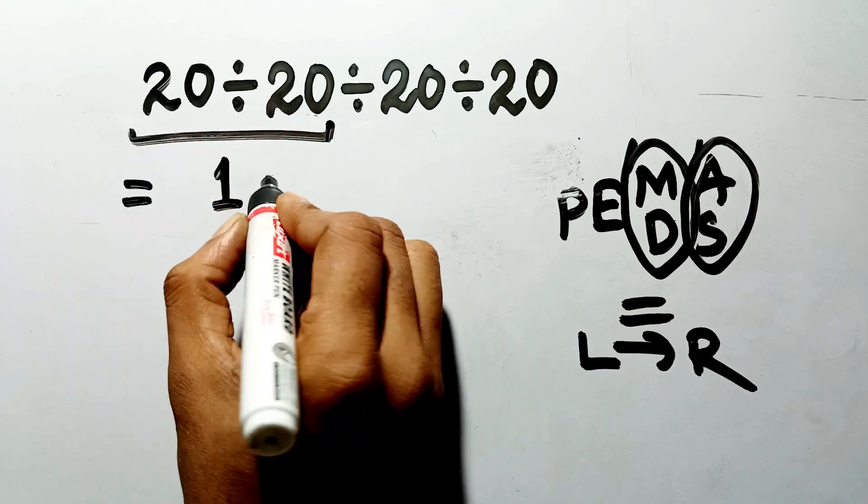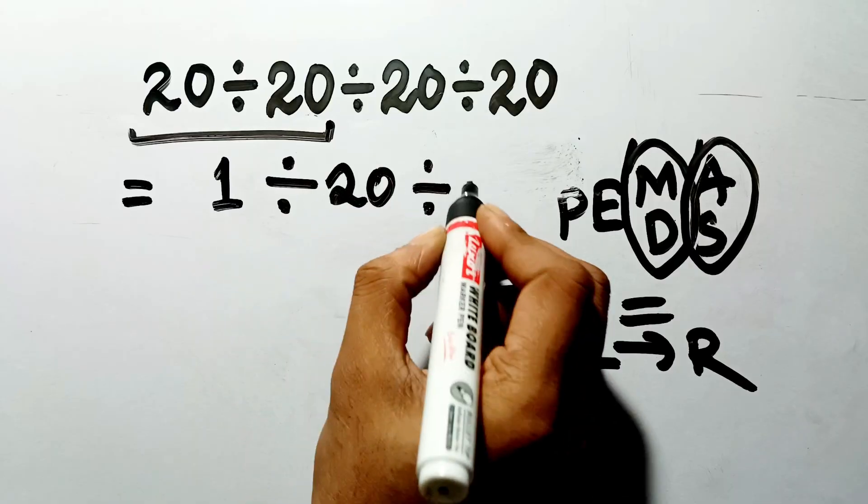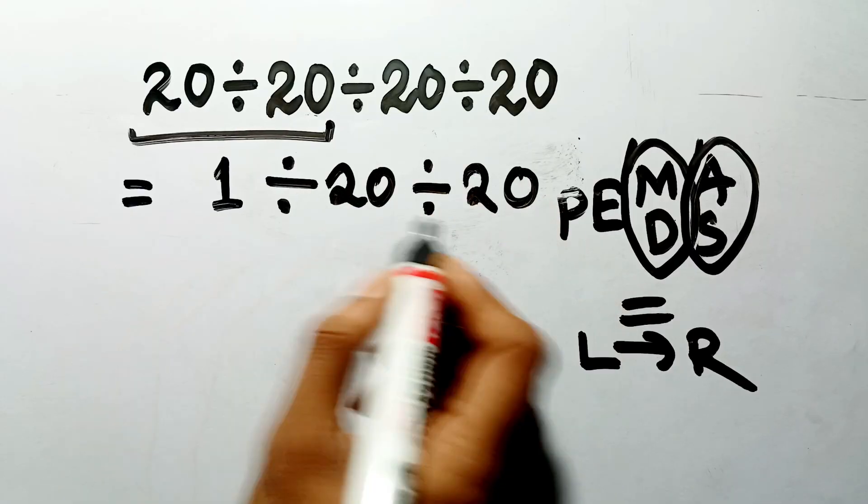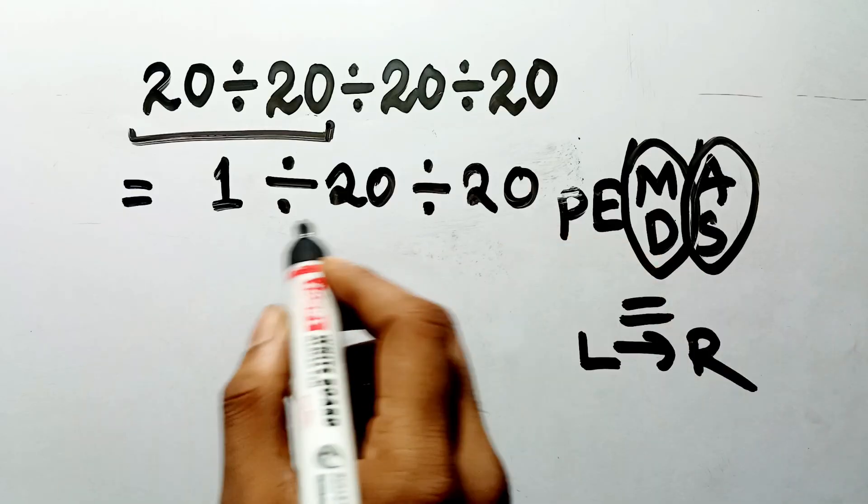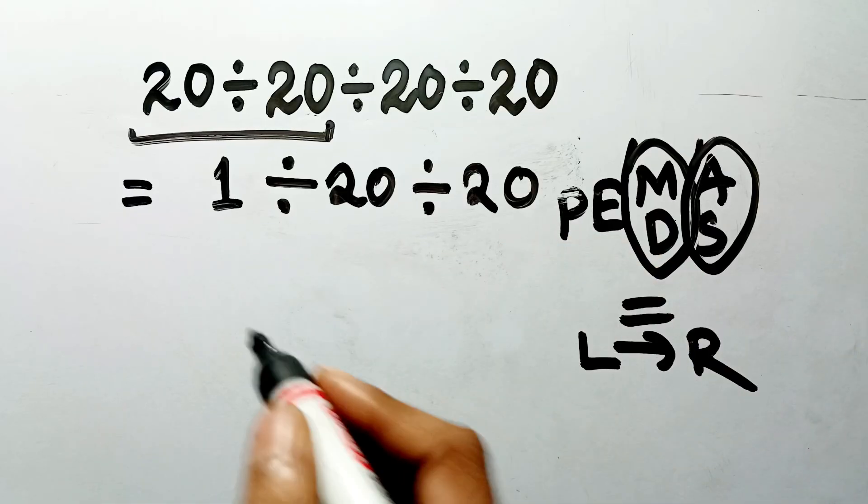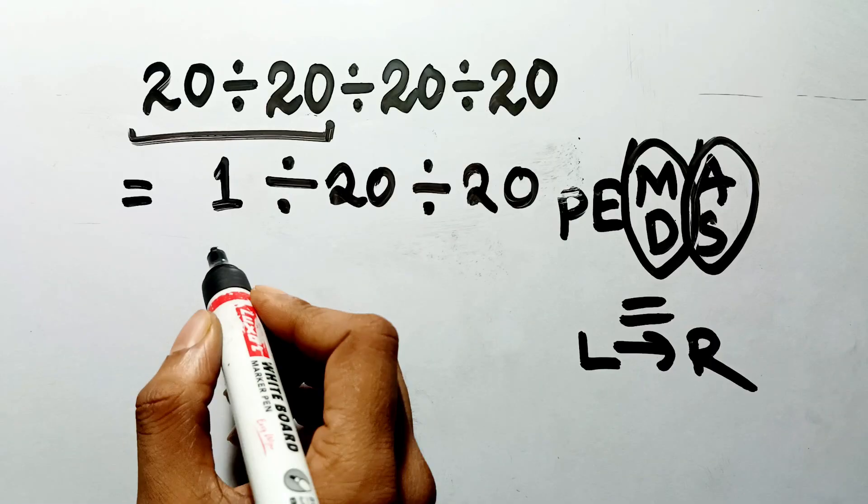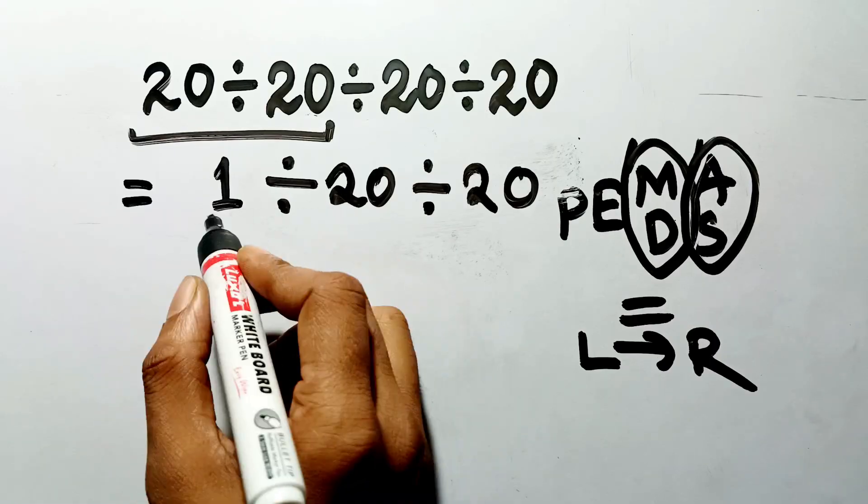So, we have 1 divided by 20 divided by 20. Now, we have two divisions remaining. According to PEMDAS, we must proceed strictly from left to right, because they are the same operation. So, here, first we have to do this division.